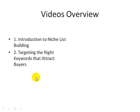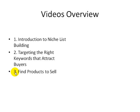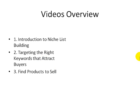There is an actual process that goes into this full system, and I break it down step-by-step. Video number three, we're going to talk about how to find products to sell — from creating your own products, to outsourcing the creation process, to finding affiliate products to sell. We want to make sure we have products to sell before we build that specific list.